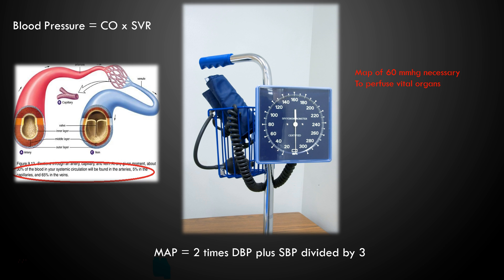When you take a blood pressure and you have your systolic and diastolic numbers, what you can do is determine the mean arterial pressure. The MAP is calculated by taking two times your diastolic blood pressure plus your systolic blood pressure, divided by three. You need to have a MAP of greater than 60 in order to perfuse vital organs. The mean arterial pressure is measured in the aorta, giving you an average blood pressure during one cardiac cycle.